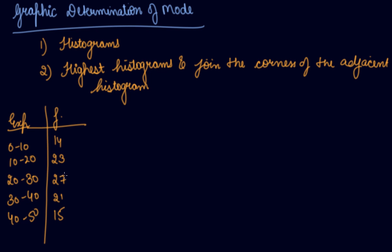We could use the formula method: find the highest frequency (27), identify the modal class, and apply the formula L₁ + (f₁ - f₀) / (2f₁ - f₀ - f₂) × i. However, since we need to find this using a graph, we will make histograms.